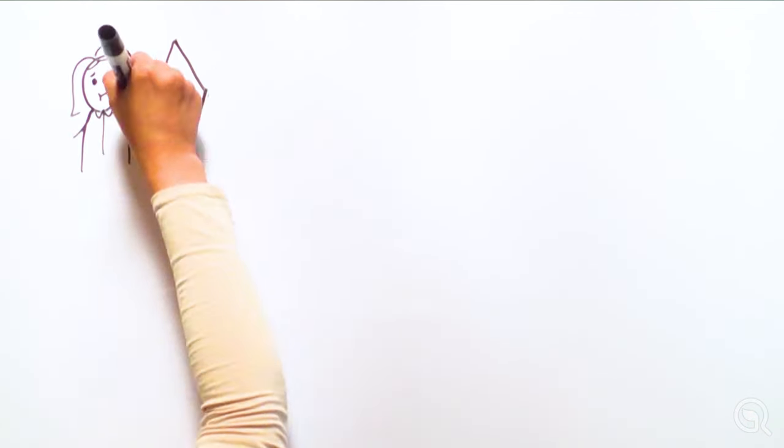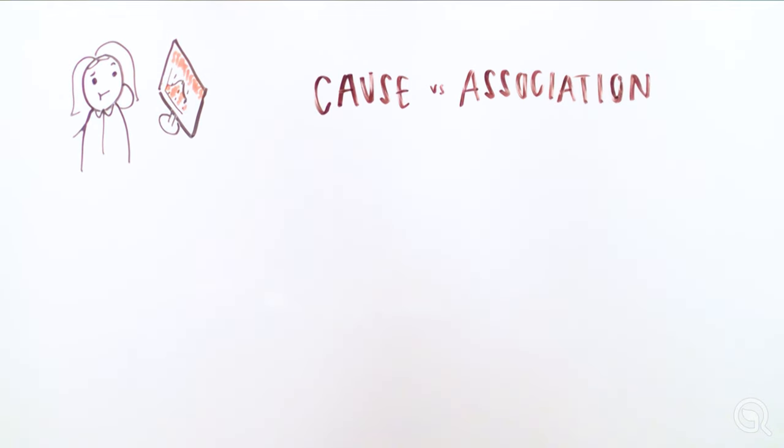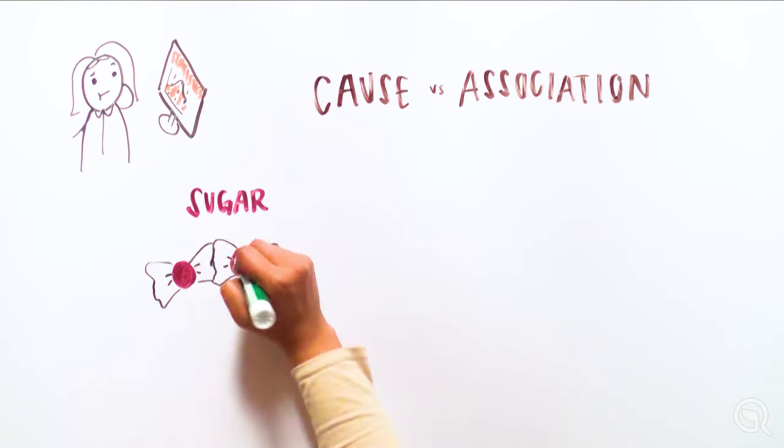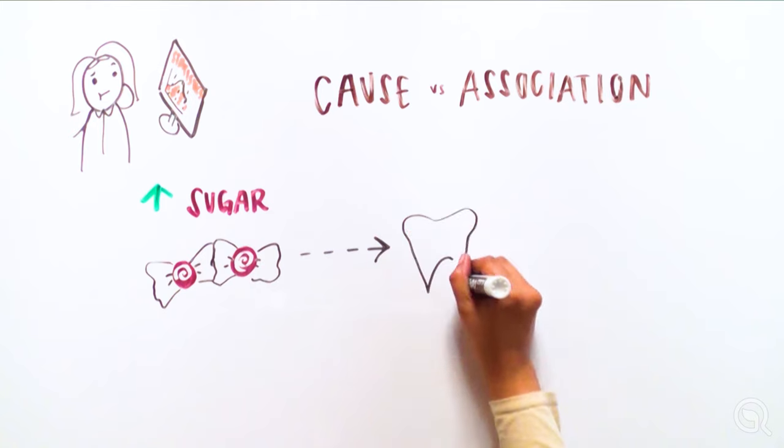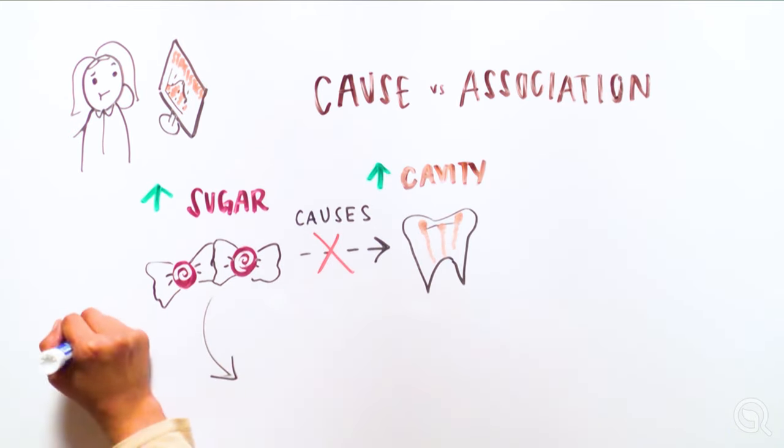When analyzing the results of an experiment, it's important to keep in mind that even if a statistical test shows there is a relationship between the variables, it does not necessarily mean one causes an effect on the other. There is just a correlation or association between them. In our example, even if we show that eating more sugar leads to more cavities, this does not necessarily mean sugar causes cavities.